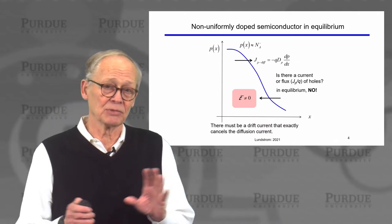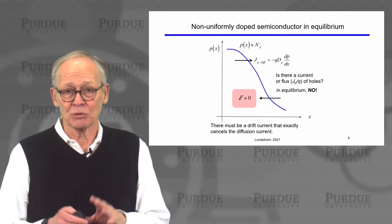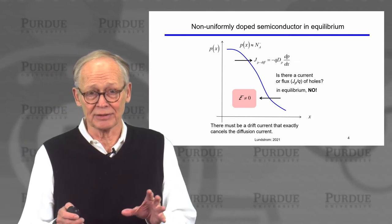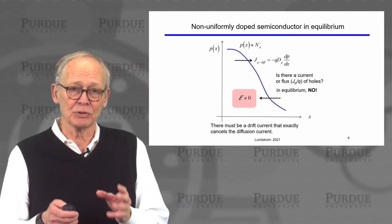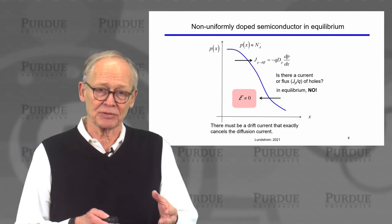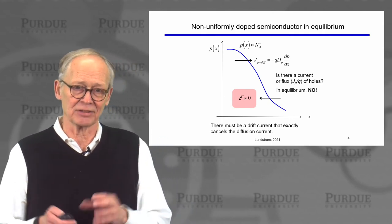So in equilibrium, no current flow, quasi Fermi level is equal to the Fermi level, its gradient is zero. From a drift diffusion perspective, we have drift currents and diffusion currents canceling each other out.